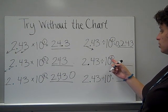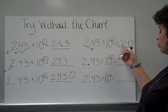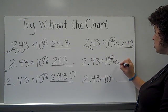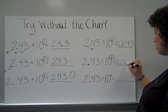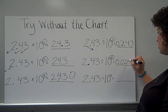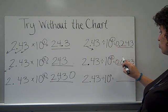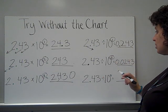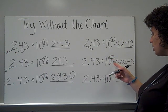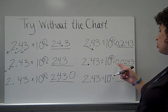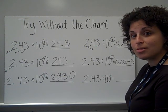Divided by 10 squared — that means there are going to be two moves. The first move put the 2 in the tenths place, so now a second move puts it in the hundredths place, the 4 goes to the thousandths, and the 3 to the ten-thousandths place. Each digit has moved one place further. So 2 and 43 hundredths divided by 10 squared is equal to 0 and 243 ten-thousandths.